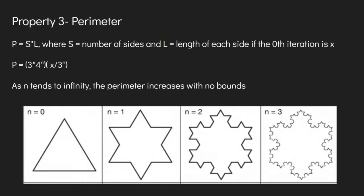This leads to the third property, perimeter. The perimeter actually increases with no bounds as the number of iterations n tends towards infinity. To find the total perimeter, multiply the number of sides by the length of each side, which can be found through the equations from before. They're written again here below.